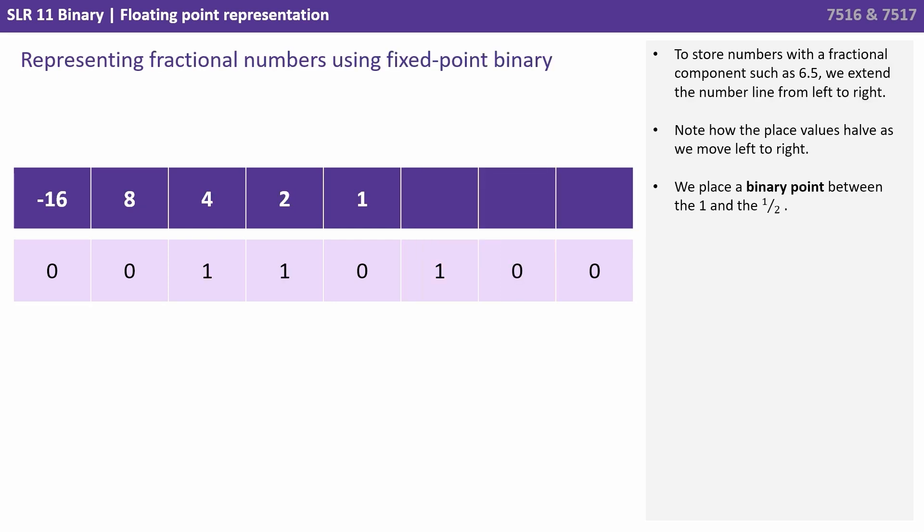To store numbers with a fractional component such as 6.5, we extend the number line from left to right. Note how the place value is now half as we move from left to right. We place the binary point between the 1 and the half column.